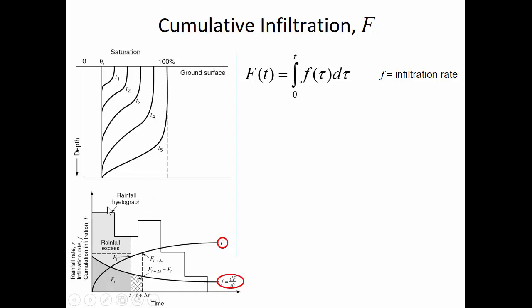A rainfall-height graph shows the rainfall rate over time, measured perhaps in 15-minute increments. The area above the infiltration rate curve is called rainfall excess — water that falls onto the ground but doesn't infiltrate and must run off. The three key quantities are: rainfall amount, infiltration amount, and their difference. Rainfall excess represents water moving toward a creek or storm drain. The area under the infiltration curve is how much got into the soil; the area above is runoff.